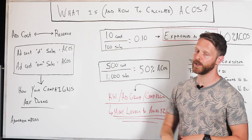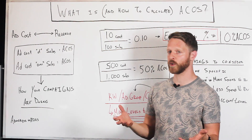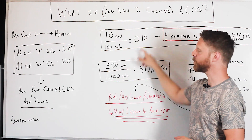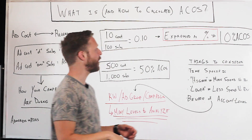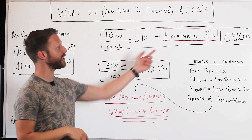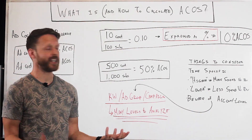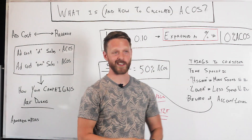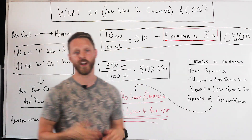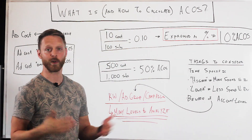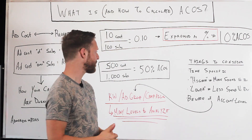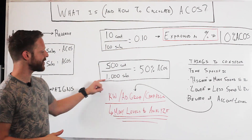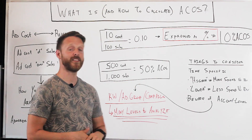Let's take a look at some quick examples. Let's say you spend ten dollars on a keyword and that keyword generates a hundred dollars worth of sales — that's 0.1, which expressed as a percentage is 10% ACoS. All you have to do is move the decimal point over two spots, or multiply by 100. Another quick example: $500 in cost with $1,000 in sales gives you 50% ACoS.